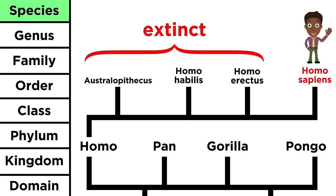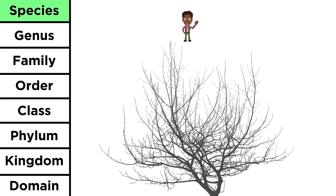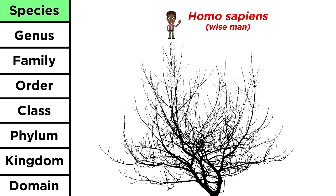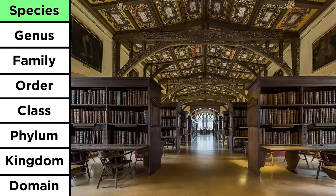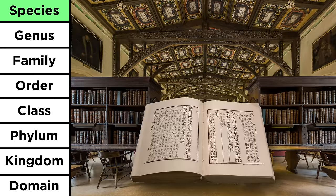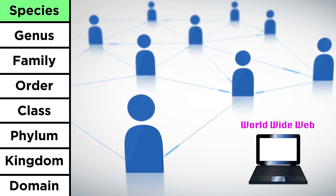The species that came before us — Homo erectus, Homo habilis, and many others — are all gone, and Homo sapiens, which means wise man, sits at the very top of the tree, the only species to have evolved an intelligence that spawned complex civilizations and information storage, first as written language, and eventually the omnipresent internet, which you're using right now.